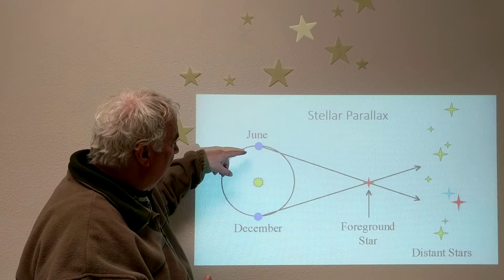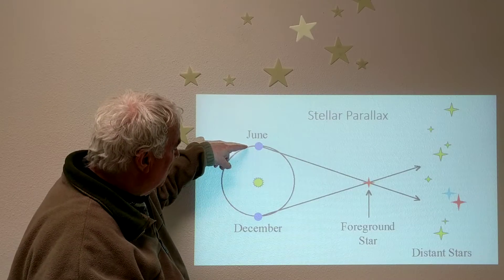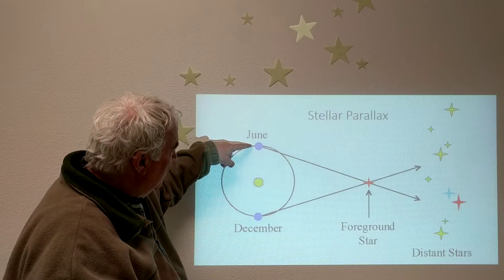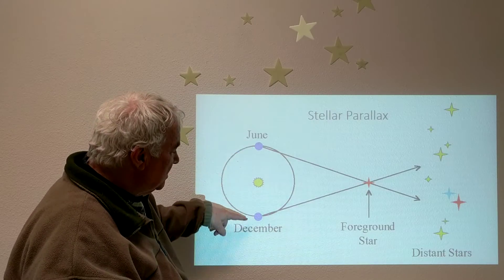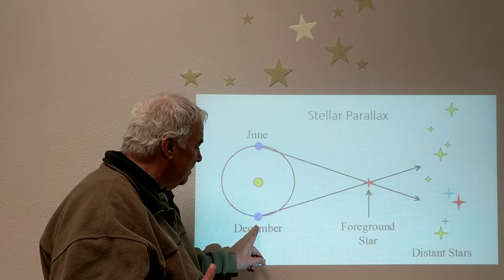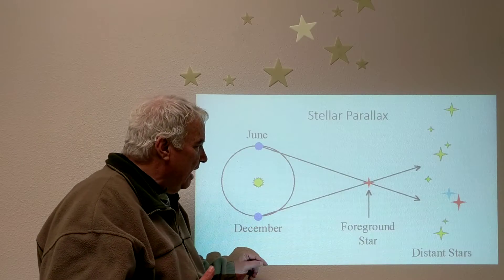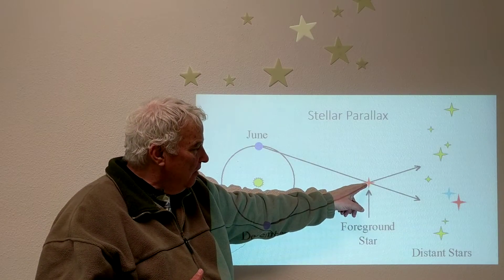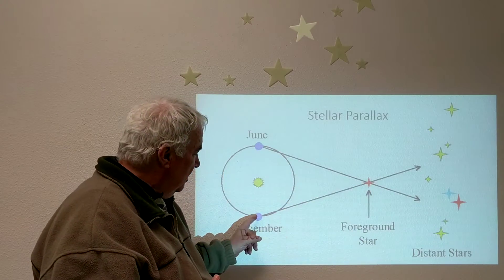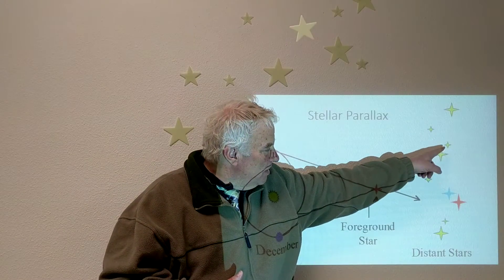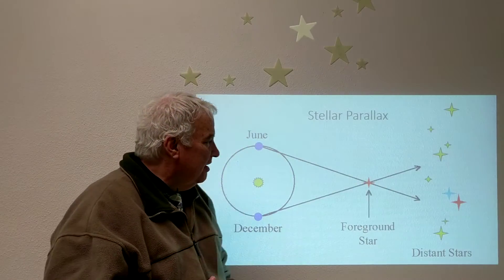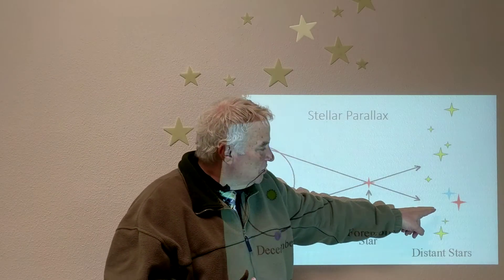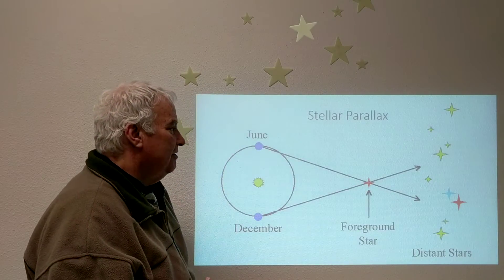So if we consider that the Earth orbits the Sun, it will be at one point in the orbit in June, and six months later in December it would be at the opposite point in its orbit. If the star is here, the star will appear in December over here, closer to that yellow star there, and in June the star will appear closer to the red star down over here.